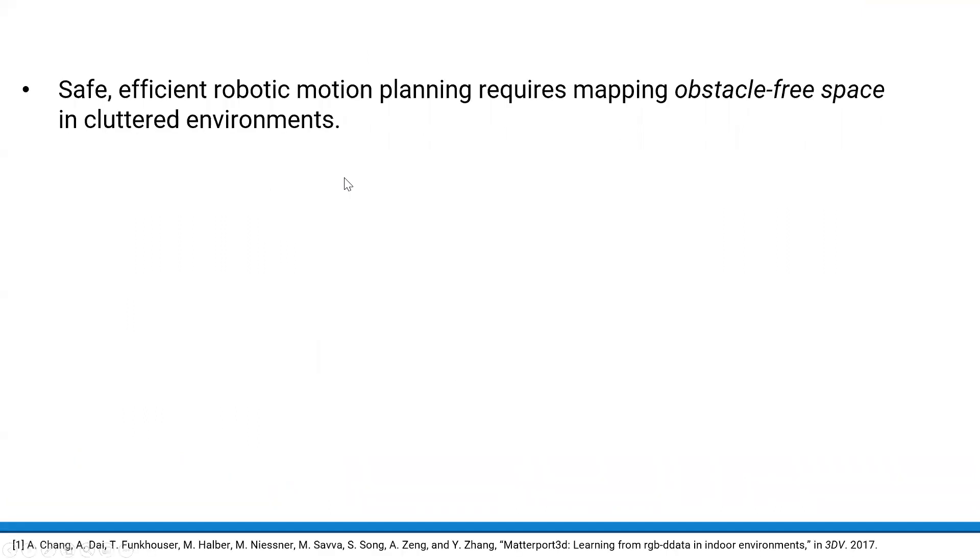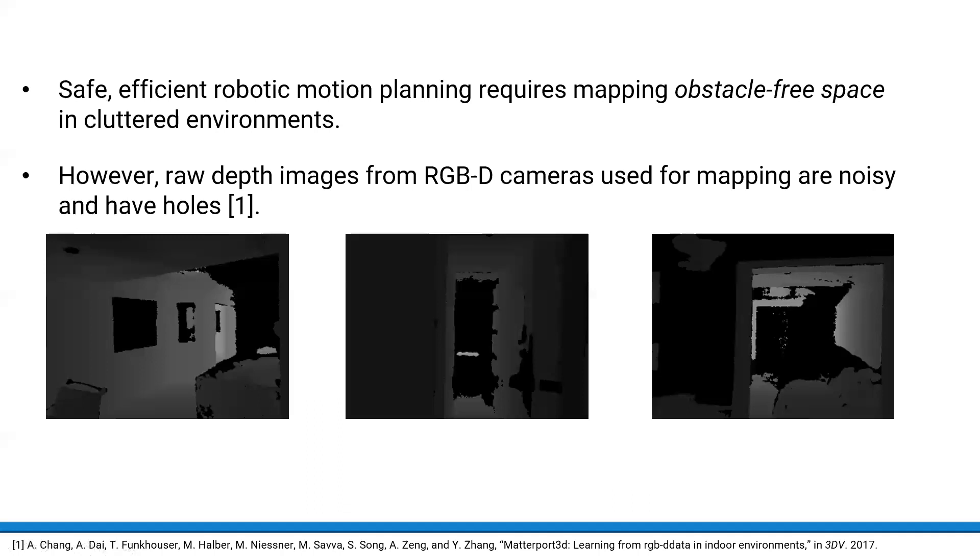In many robotic applications, a key requirement for safe and efficient planning is the ability to map obstacle-free space in unknown cluttered environments. However, as can be seen in these examples, commodity-grade RGBD cameras produce images with noise and missing data in view of surfaces that are too glossy, too bright, or simply too far away. This may lead to inefficient or inaccurate mapping performance, limiting the free space discoverable for robotic navigation.